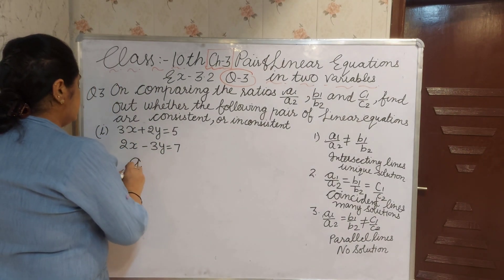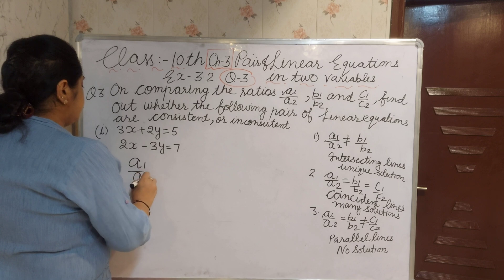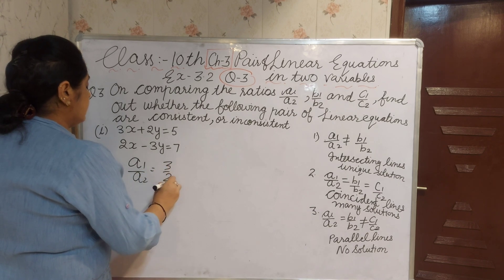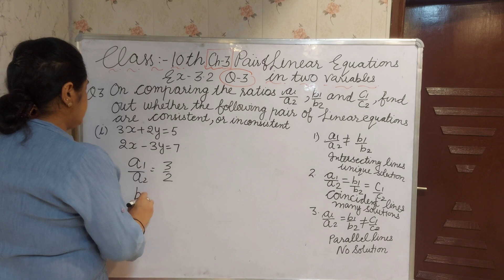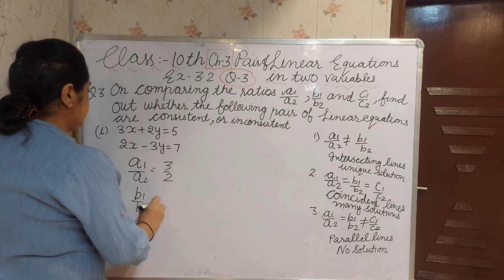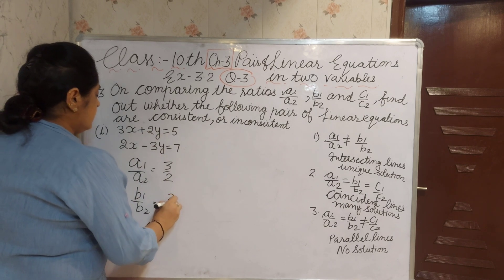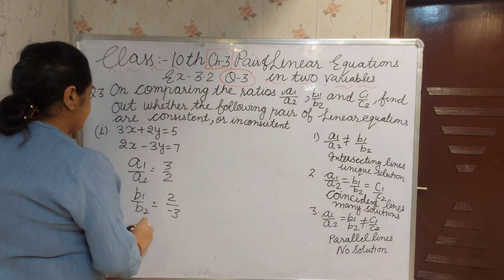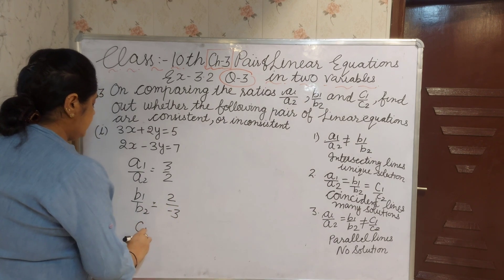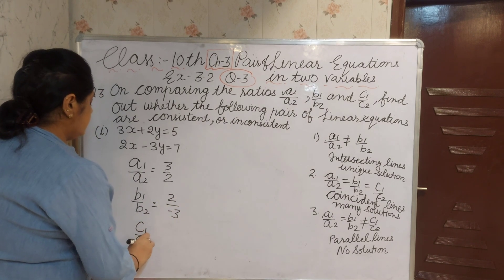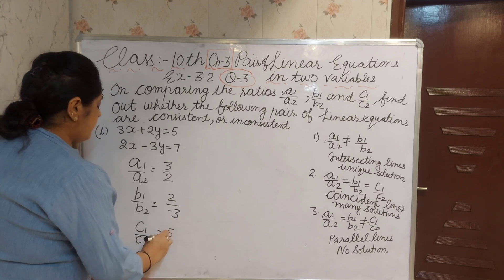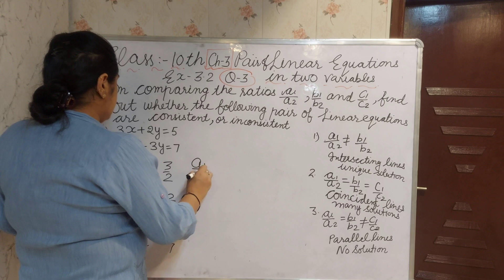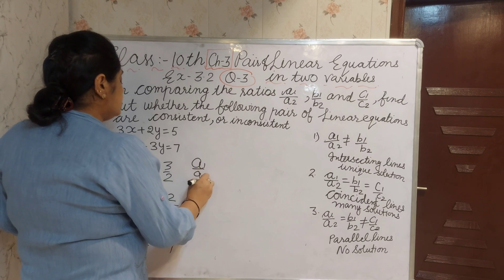Now we compare A1 by A2: 3 by 2, and B1 by B2: 2 upon minus 3, and C1 by C2 is 5 upon 7.